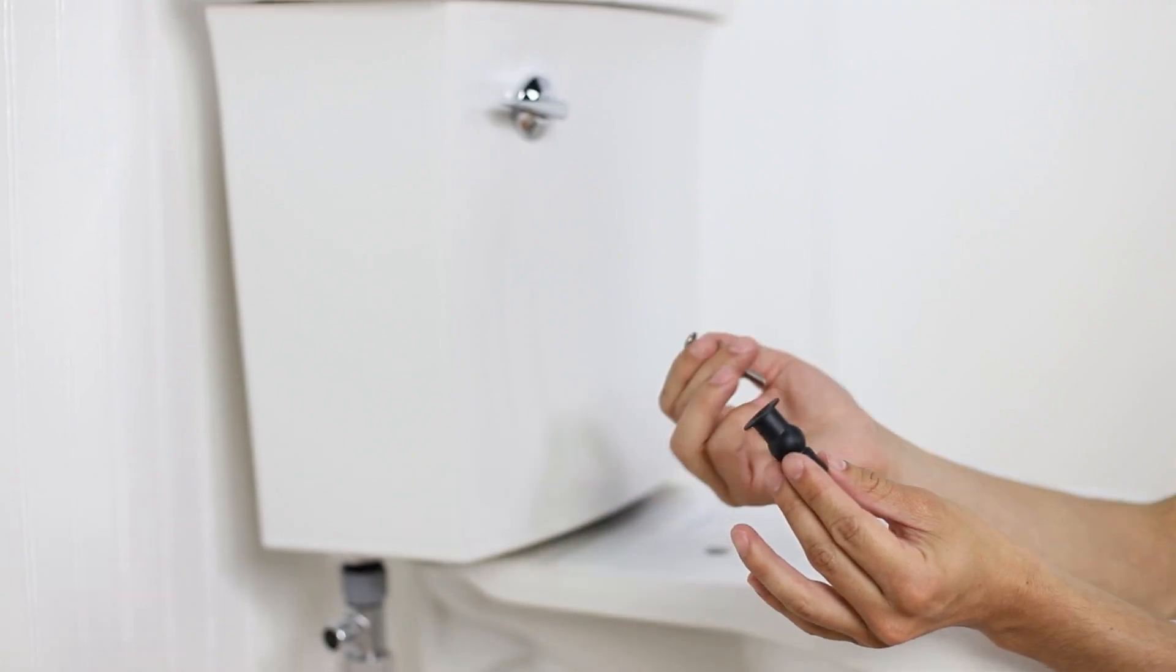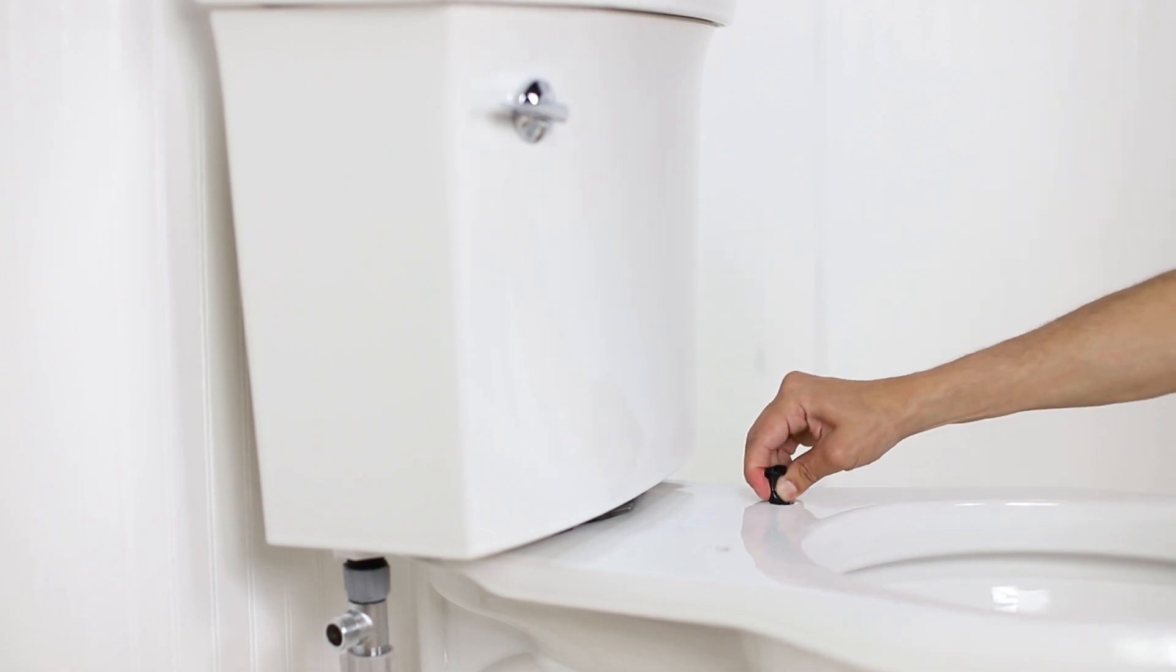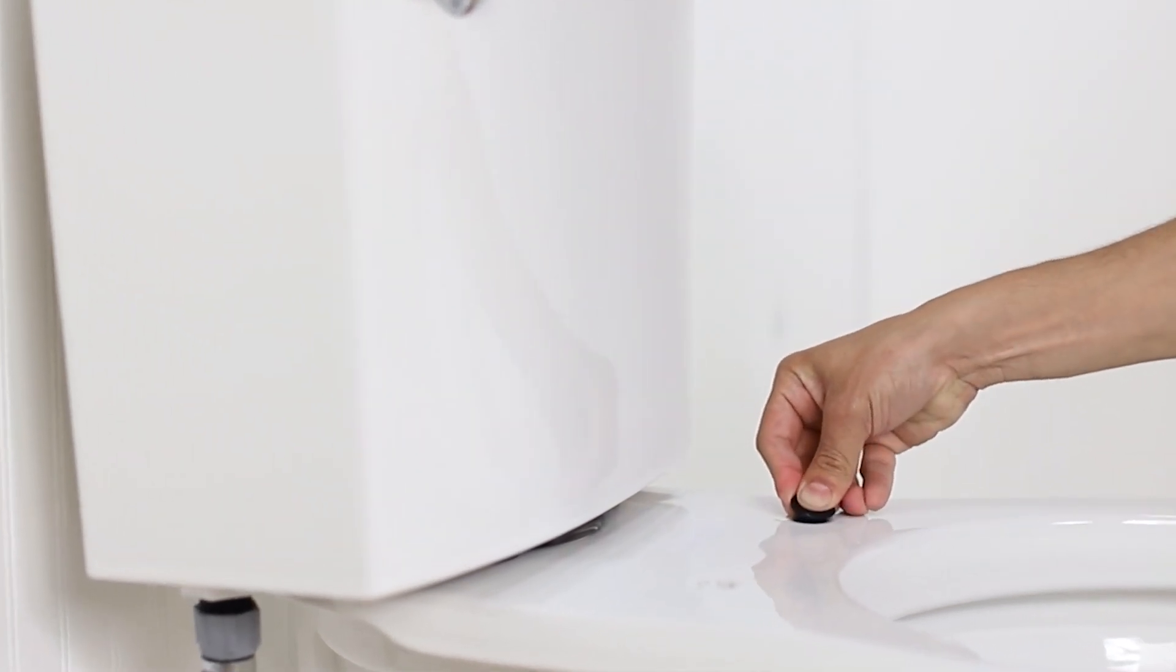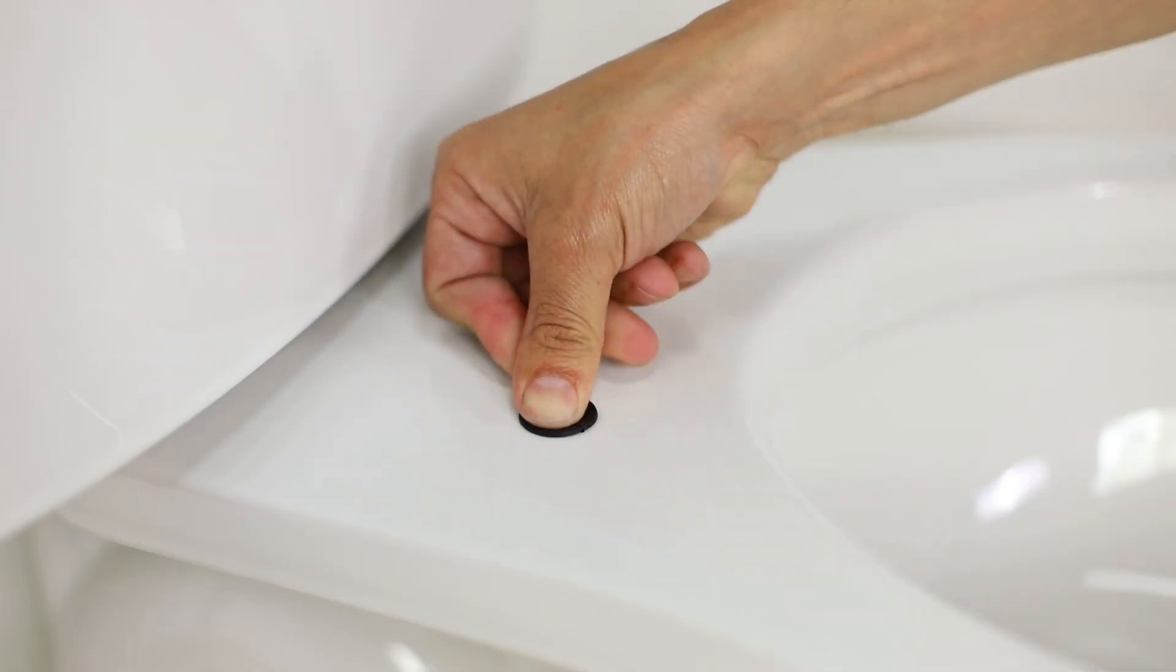To mount your swash, wet the rubber anchors with water. Squeeze the sides of the anchors and fully press them all the way down into the mounting holes on the top of the toilet.